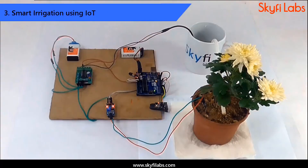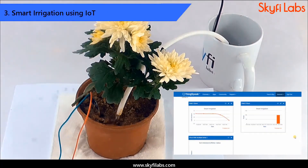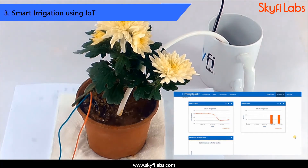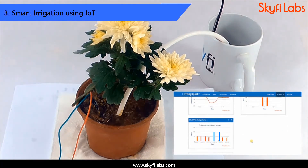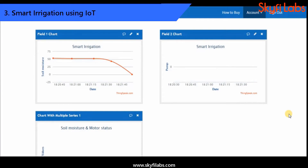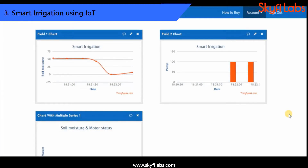Next, you will build a smart irrigation system that automatically irrigates the field whenever the moisture content drops below a threshold. The system also sends the data collected to the cloud for storage and analysis.